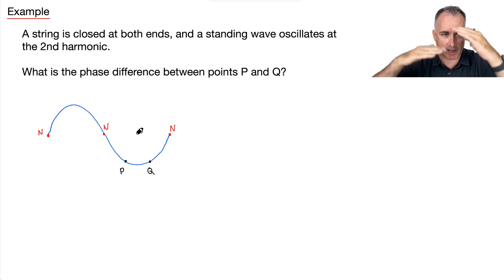So we've got our nodes. These are the places where it's not oscillating. And the question is, what is the phase difference between points P and points Q? You just had to know the definition.